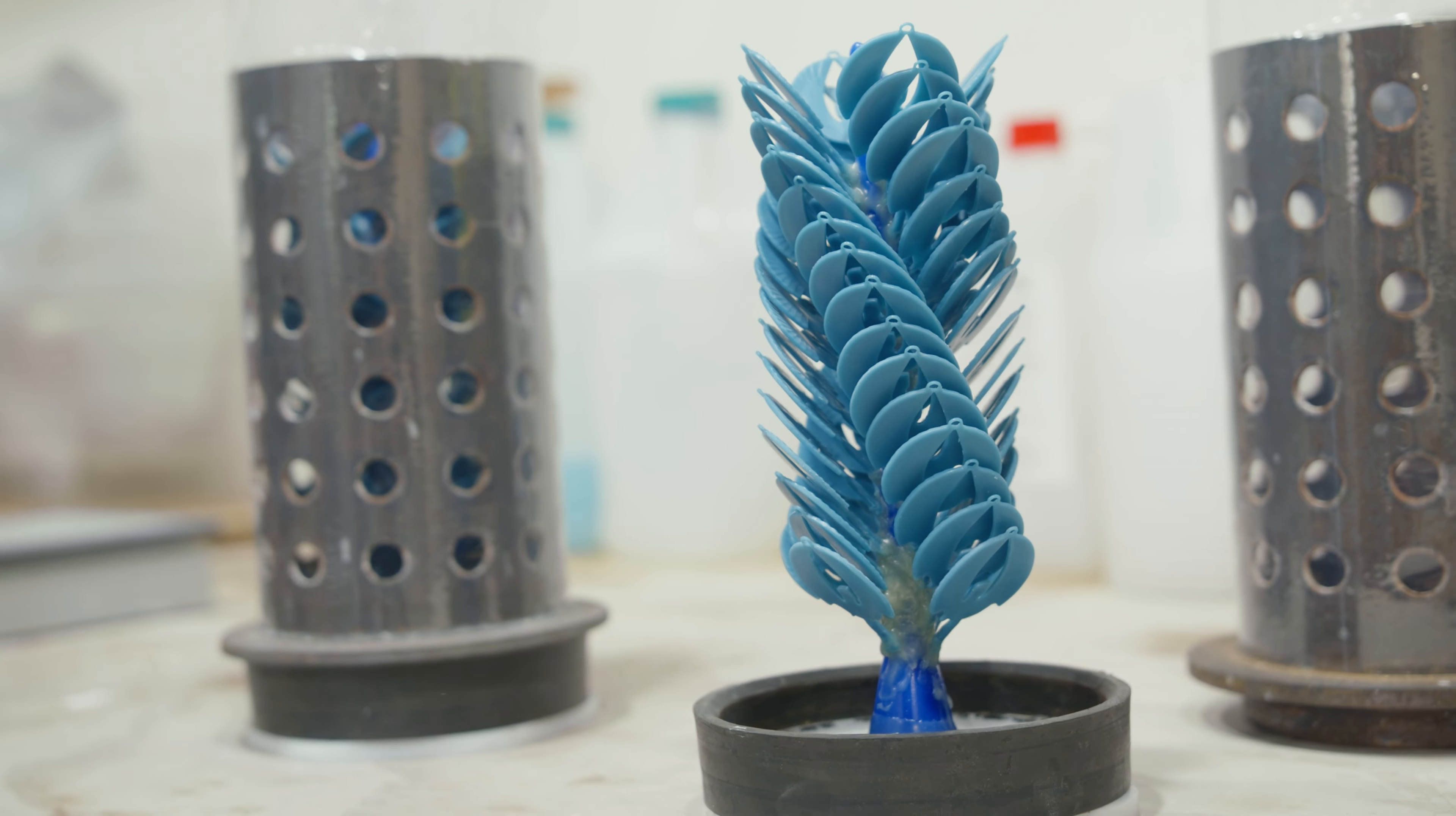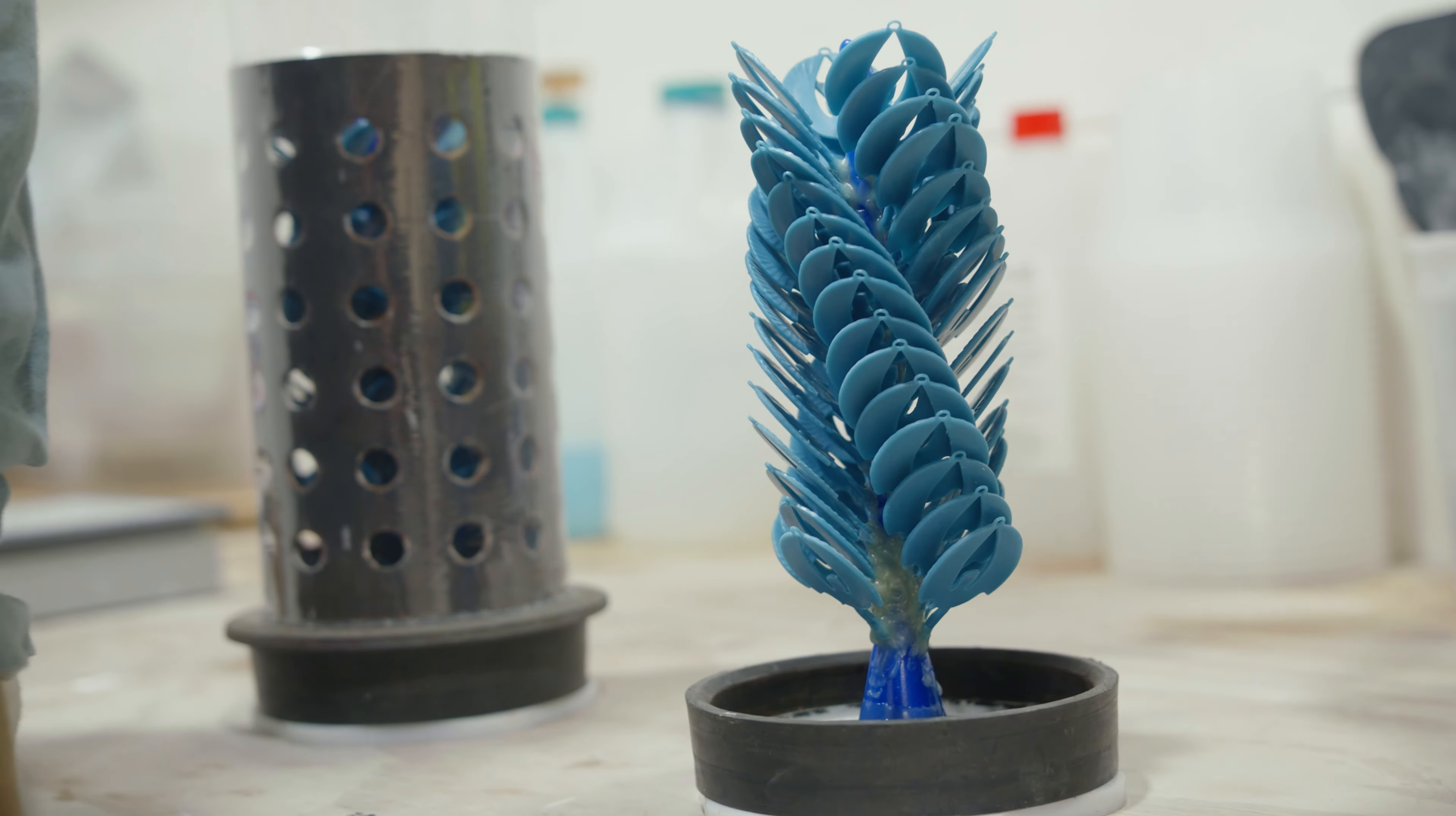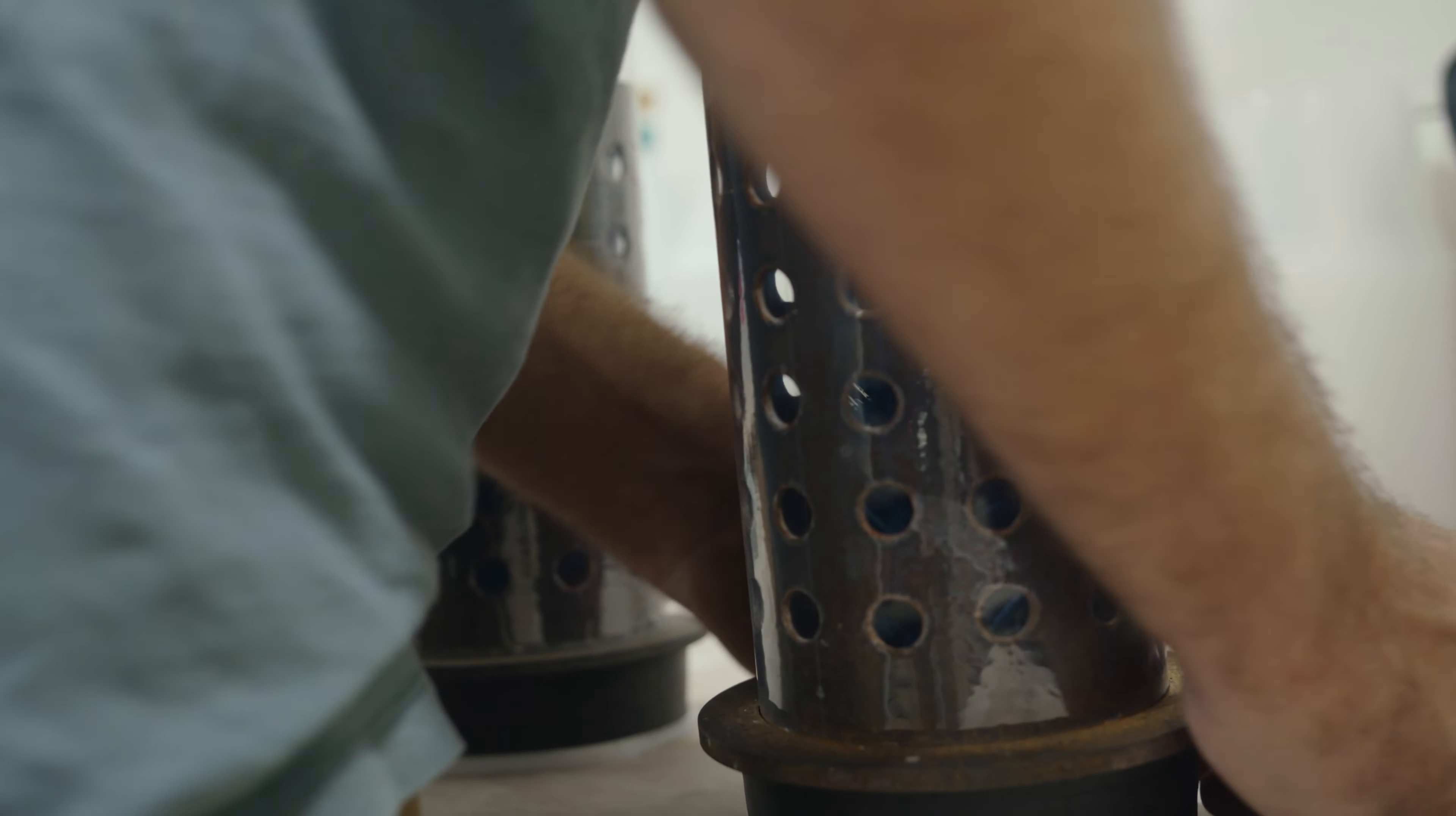Once the tree of wax pieces is created, it is encased in a flask, a hollow cylinder shaped metal case open at both ends. The flask is slipped over the tree and nestles airtight into the rubber boot.